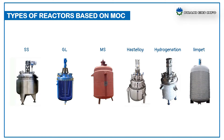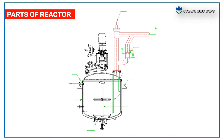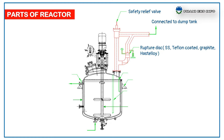The reactor basically consists of a reaction vessel, feeding lines, agitator, jacket, motor, gearbox, coupling, brackets, and safety devices. Let us see some important parts of reactors and their functions.